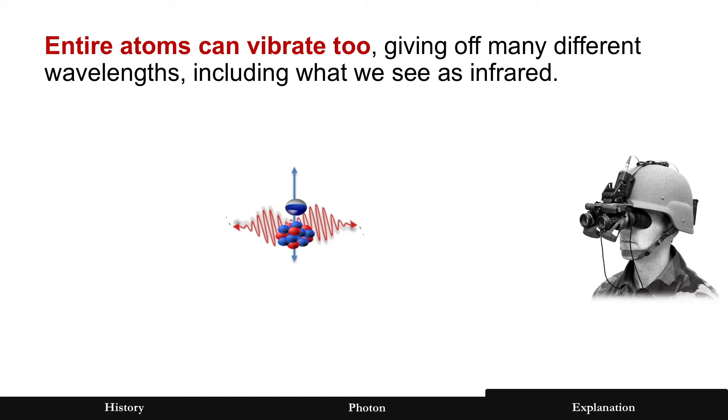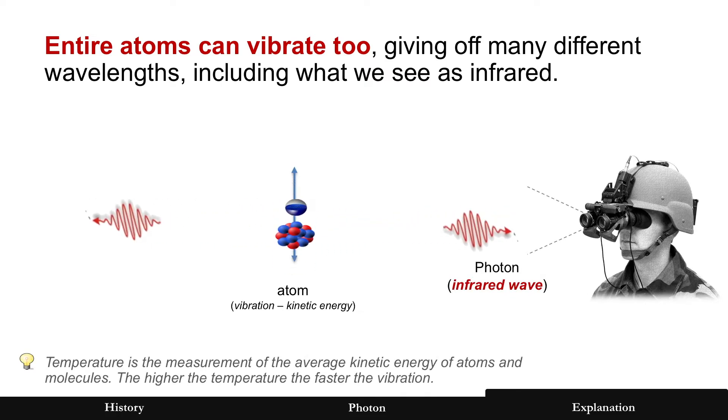It doesn't have to only be vibration of electrons. Entire atoms can vibrate too, and this gives off many different wavelengths, including what we can see as infrared with the help of goggles.